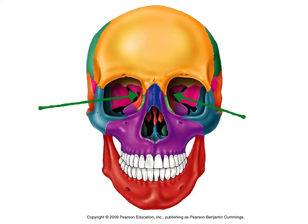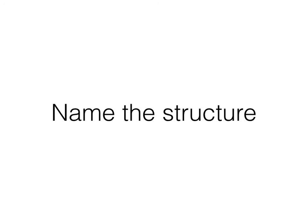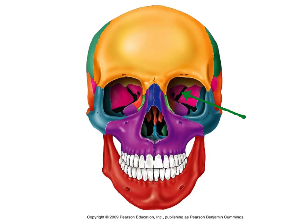I just want you to know what those small openings in the back of the pink bone there are called. Those are the optic canals, and if you remember when we did the interior view of the skull, they come out right on the top of the sphenoid bone, which your optic nerve travels through.